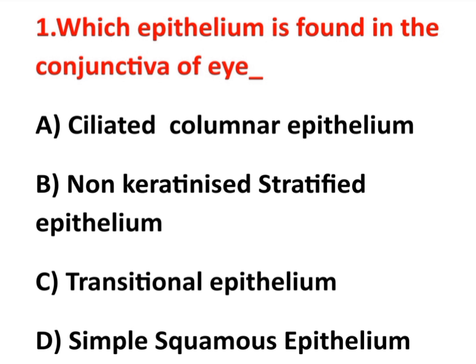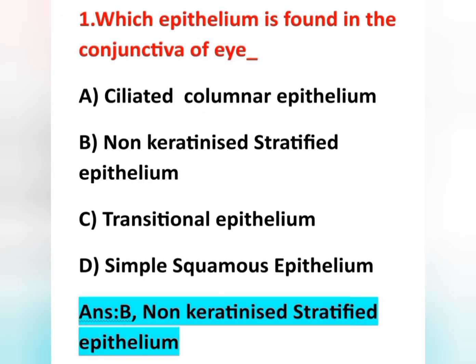The first question: which epithelium is found in the conjunctiva of the eye? The options are: option A, ciliated columnar epithelium; option B, non-keratinized stratified epithelium; option C, transitional epithelium; and option D, simple squamous epithelium. The correct answer is option B, non-keratinized stratified epithelium.